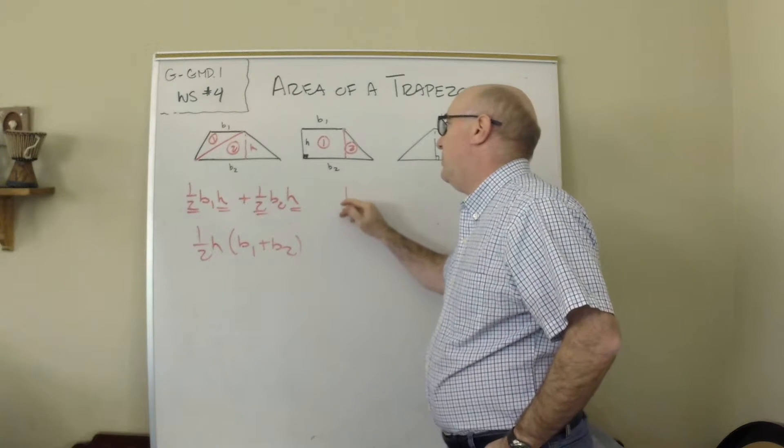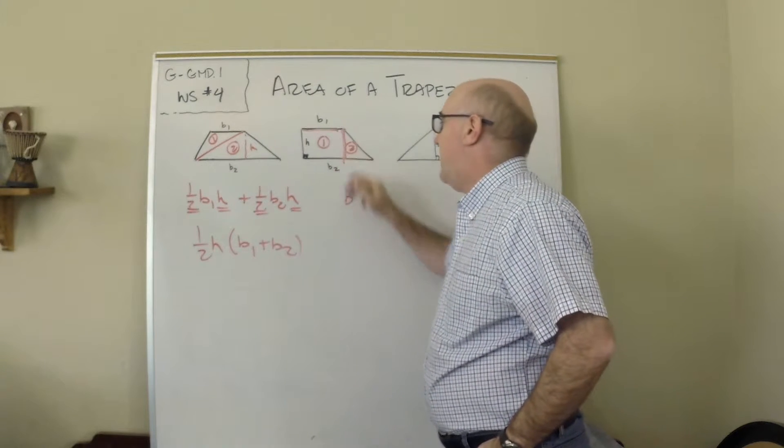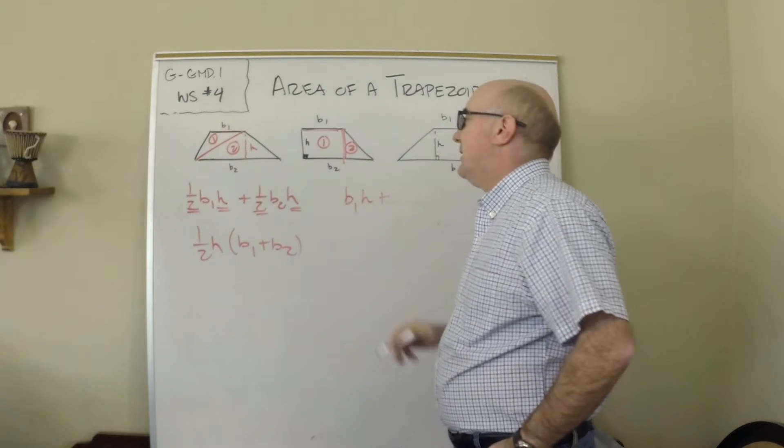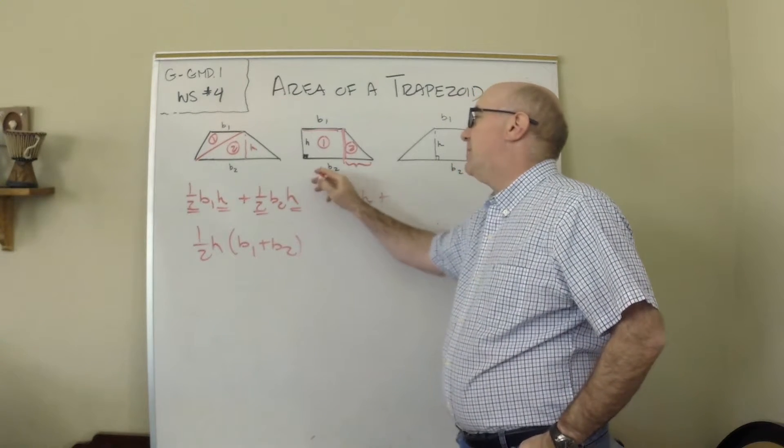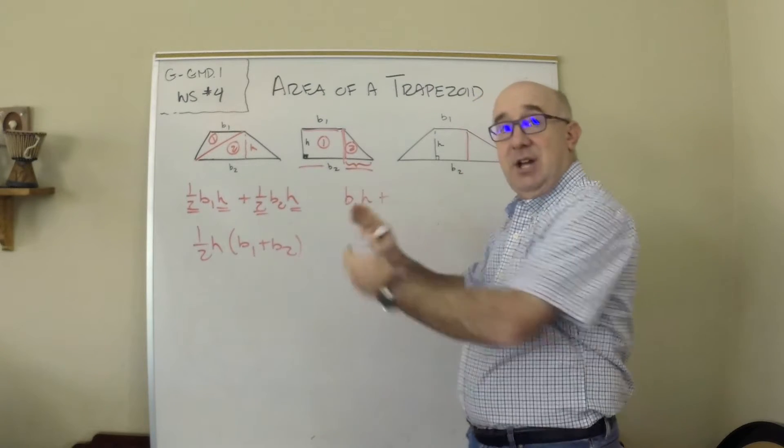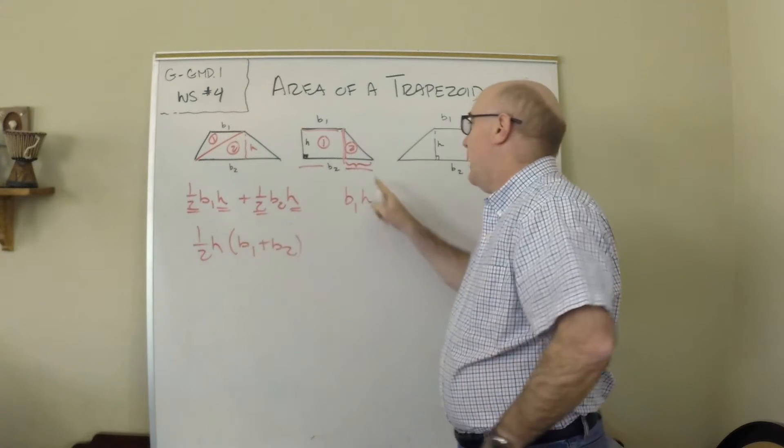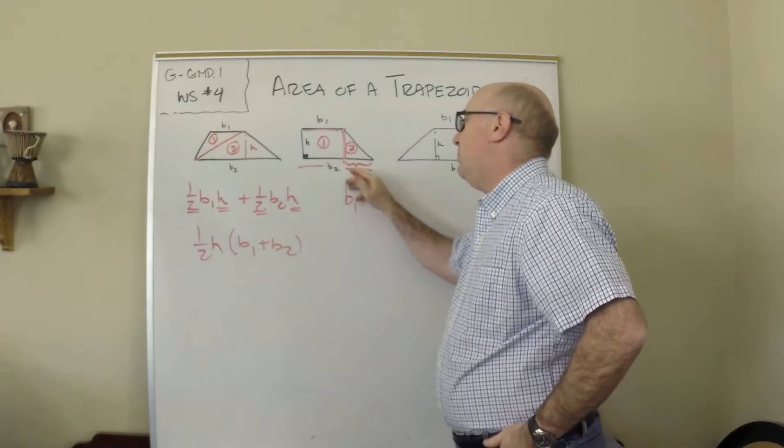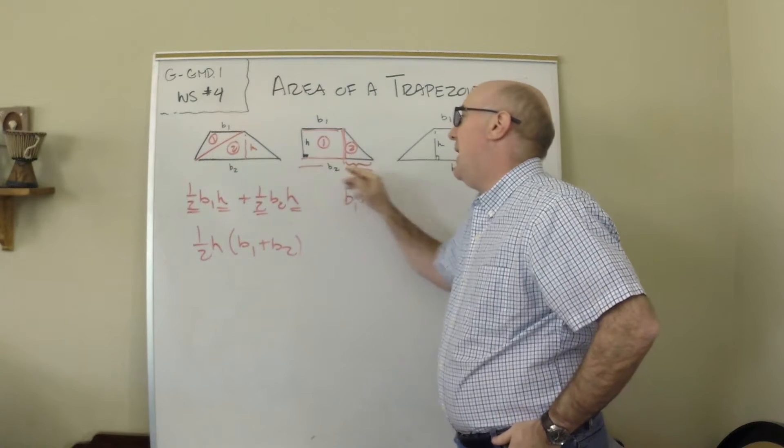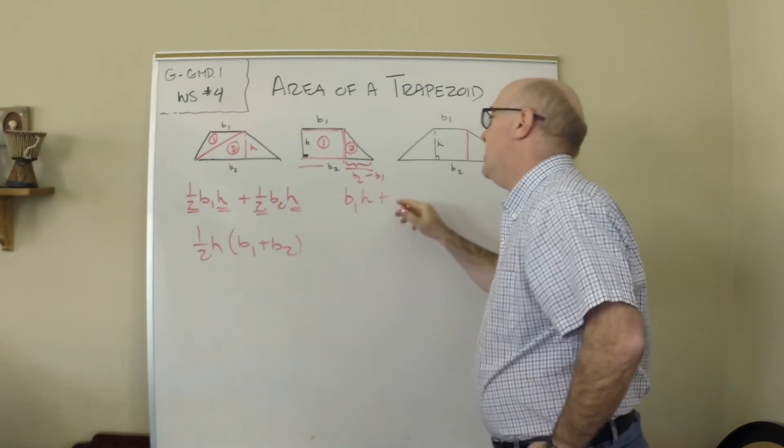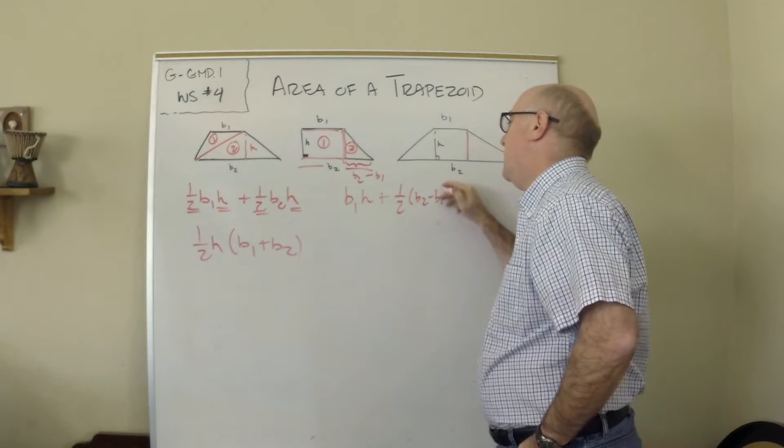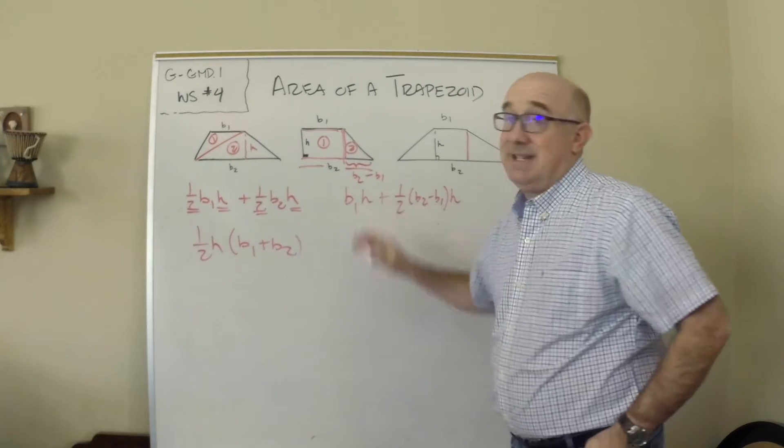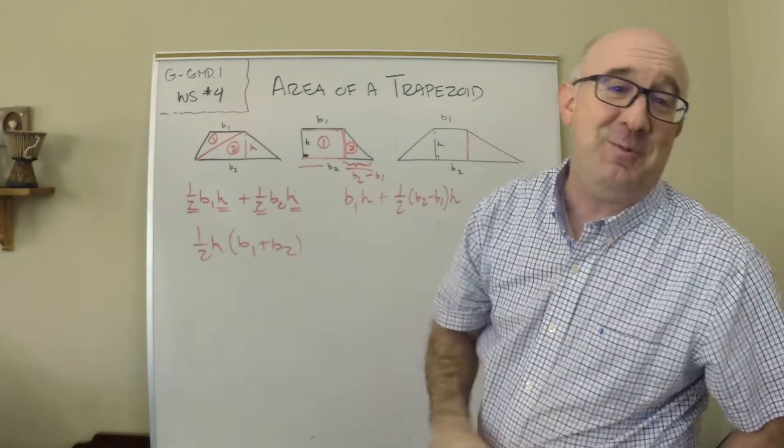This would be a rectangle, that would be a b1 times an h, so that's a little different. And then it would be this little triangle. Now what's tricky with this triangle is b2 is the entire base and I only need that part. And that part would be b2 take away minus the b1. So it would be one-half b2 minus b1 times the height. This does not look anything like what we want, but a little bit of math will help us out.